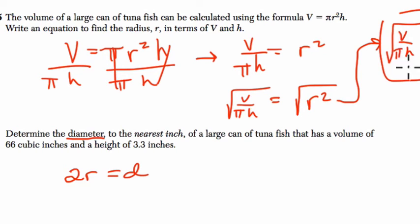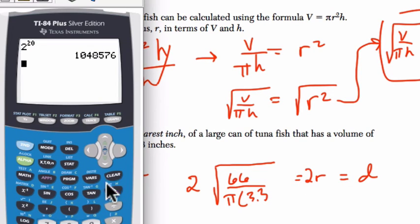So I'm going to just use this equation here and then find r and double it. So it's going to be the square root of 66 cubic inches divided by π times 3.3, and that's going to give us r, and then we're going to double it. So we'll write this: 2 equals 2r, that's going to equal d.